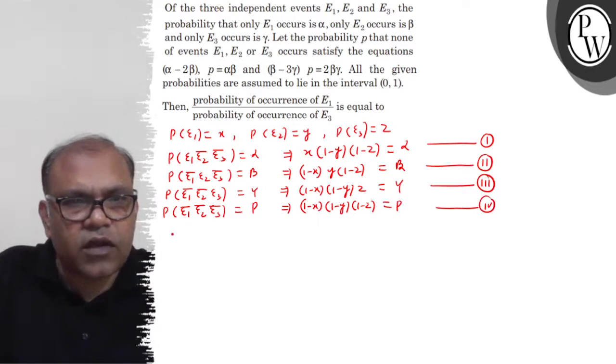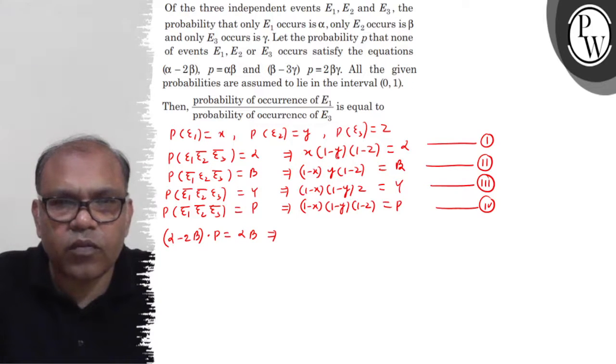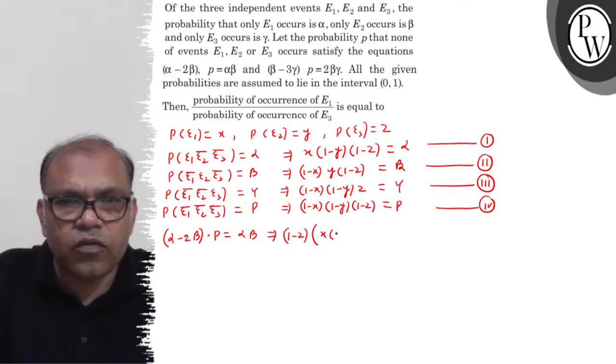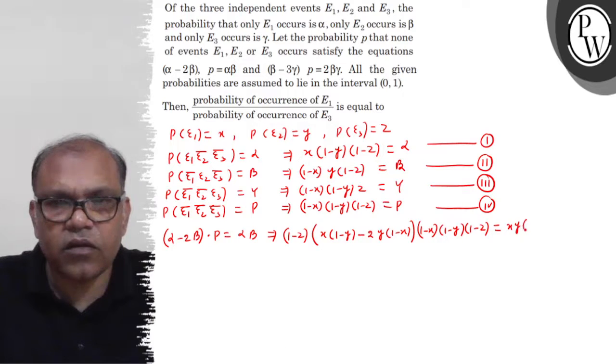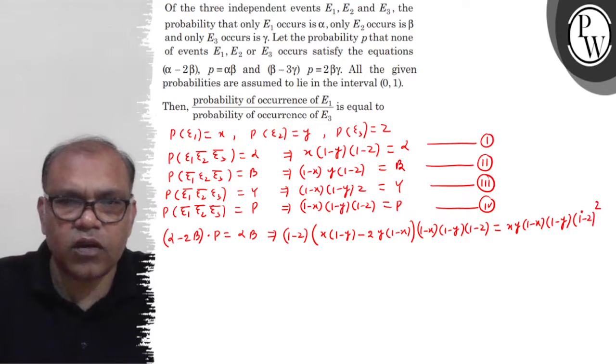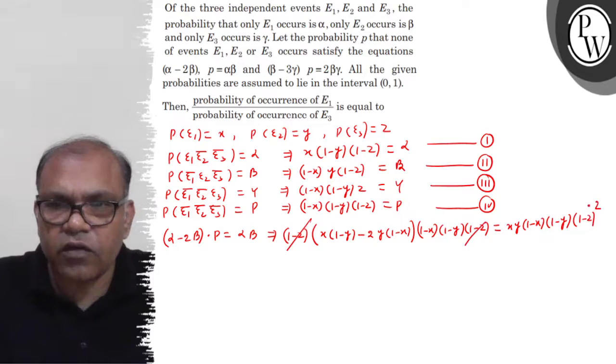Ab dekho, ugly information there raththahe, alpha minus 2 beta into P equals alpha beta. To dekho, alpha minus 2 beta, alpha aur beta mein jo common aa jaye ga, it will be (1 minus Z). And X into (1 minus Y) minus 2 into Y into (1 minus X) into P. To dekho, P ki value hai (1 minus X) into (1 minus Y) into (1 minus Z). This equals alpha beta. To alpha beta ki value aa jaaye gi X, Y, (1 minus X), (1 minus Y) into (1 minus Z) whole square. Ab dekho, ye (1 minus Z), (1 minus Z) square ke saath cancel.